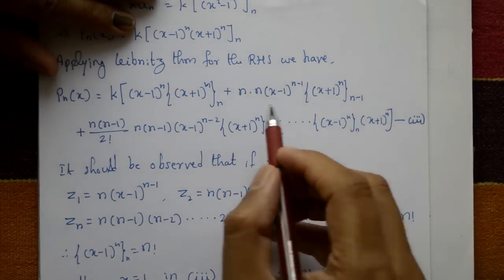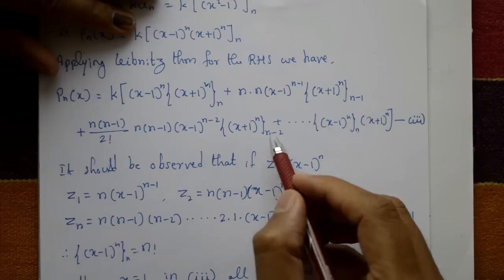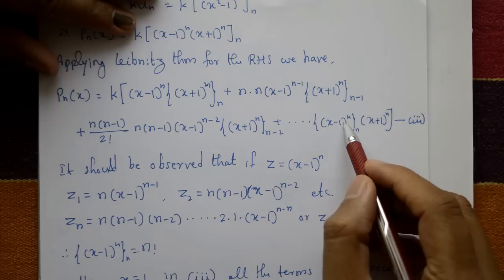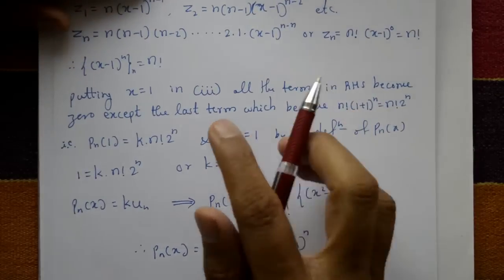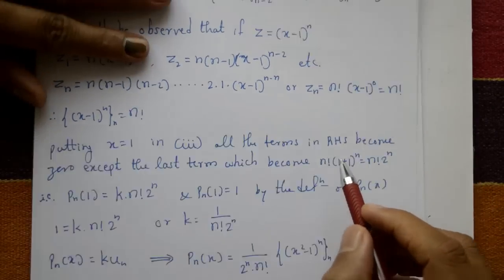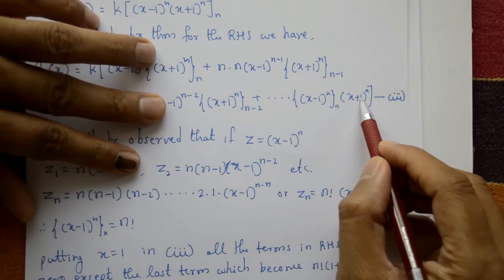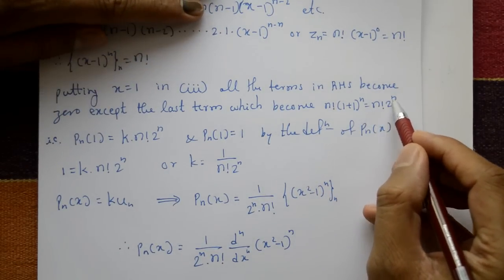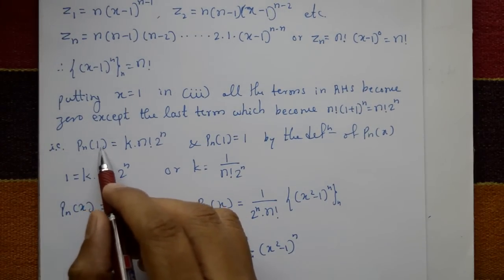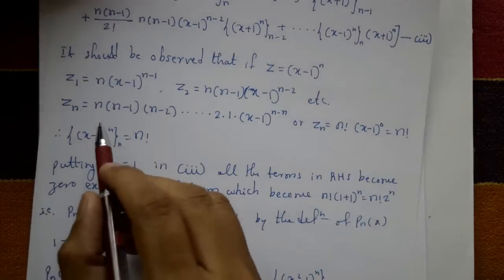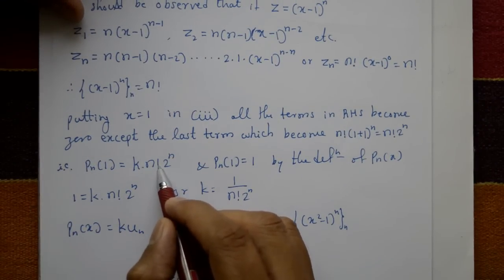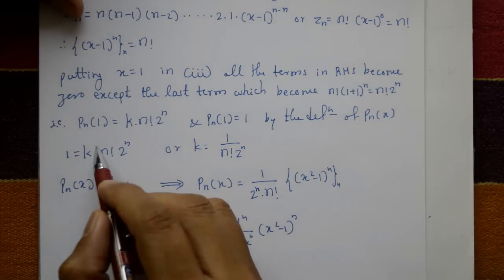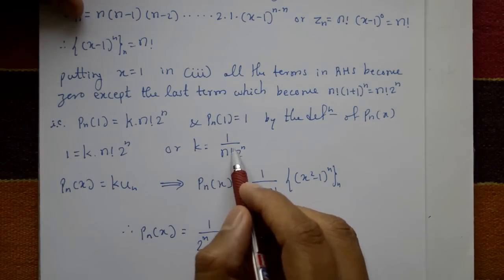Put x = 1 in equation number 3. All terms become zero except the last one, because (1 - 1) = 0, so all terms with (x-1) vanish. The last term becomes n! · (1 + 1)^n = n! · 2^n. So P_n(1) = k · u_n = k · n! · 2^n. Since by definition P_n(1) = 1, we get k = 1 / (n! · 2^n).